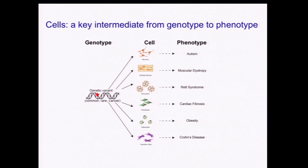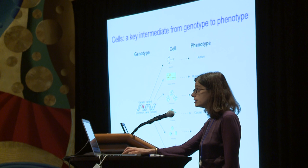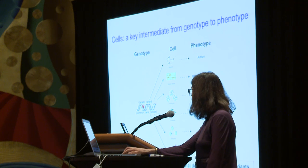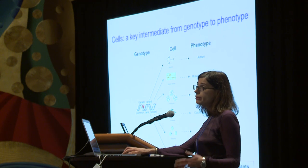Cells are also a key intermediate between the genotype and the phenotypes that we care about so dearly. For example, a genetic variant manifesting in immune dendritic cells could increase the risk of Crohn's disease. Another genetic variant manifesting in skeletal muscle cells could end up in muscular dystrophy and so on. So it becomes completely obvious that if we actually want to functionally characterize variants and act upon them, we have to know which cells we're dealing with.